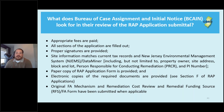BCANE conducts an administrative review to ensure the following items are complete and correct: appropriate fees are paid; all sections of the application are filled out with proper signatures; site information matches current tax records and what's in NGEMS and Data Miner; a paper copy of the WRAP application form is provided; electronic copies of required documents from Section F are provided; and the original financial assurance mechanism, remediation cost review, and RFS-FA form have been submitted when applicable.